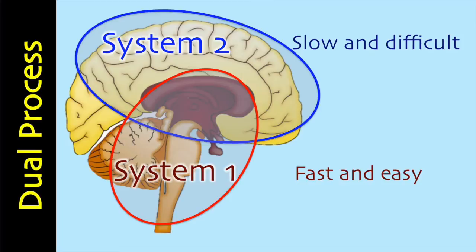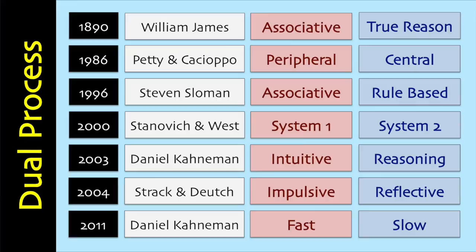Dual processing theories are any of a number of theories of social information processing that emerged in the 1980s and 1990s to explain social attitudes, stereotypes, person perception, memory, and decision making. According to these theories, two qualitatively different mechanisms of information processing operate in forming judgments, solving problems, and making decisions. The first being a quick and easy processing mode based on effort-conserving heuristics, and the second being a slow and more difficult rule-based processing mode based on effort-consuming systematic reasoning. The foundations of dual process theory likely come from William James in 1890, who believed that there are two different kinds of thinking: associative and true reasoning.